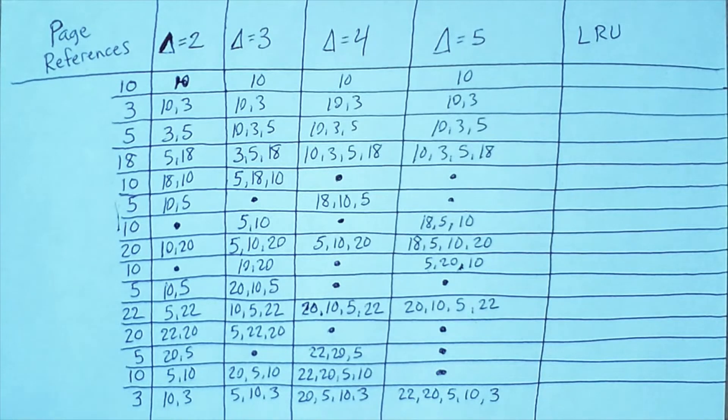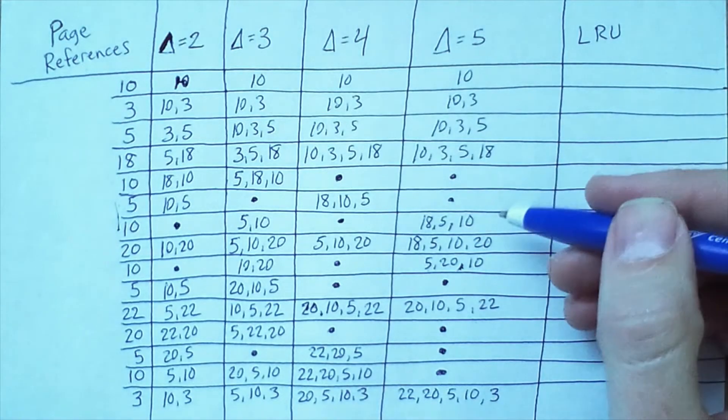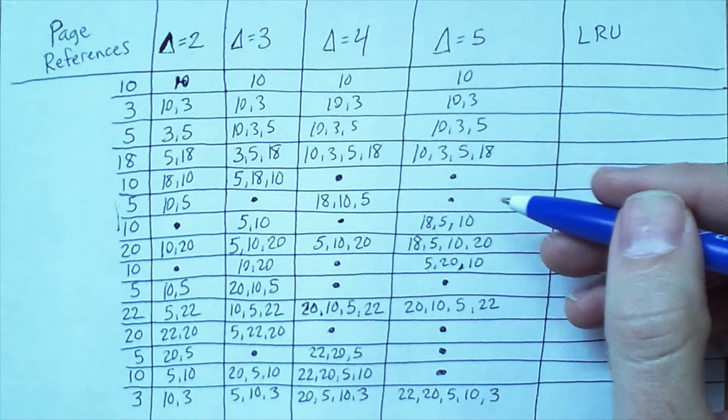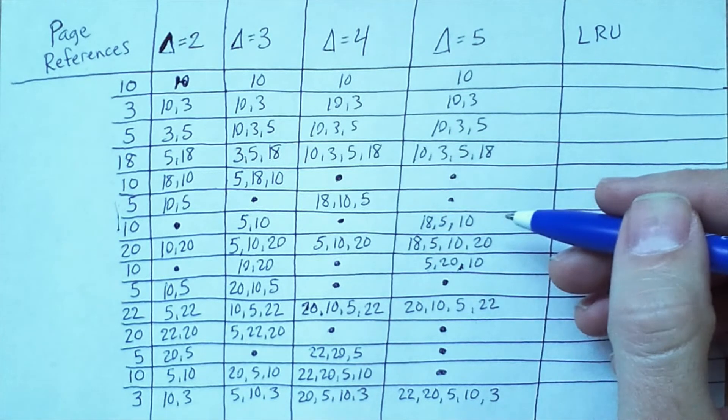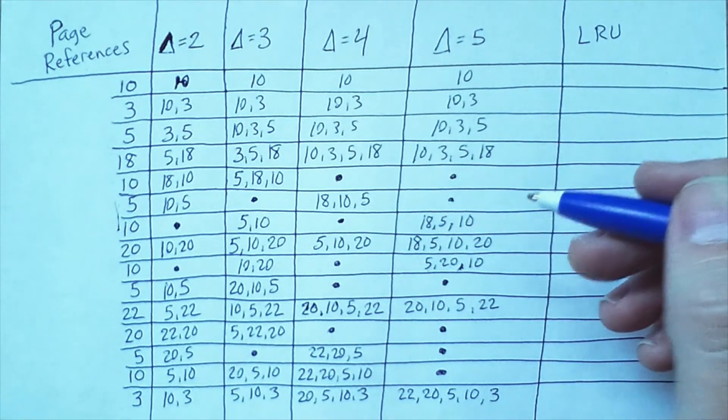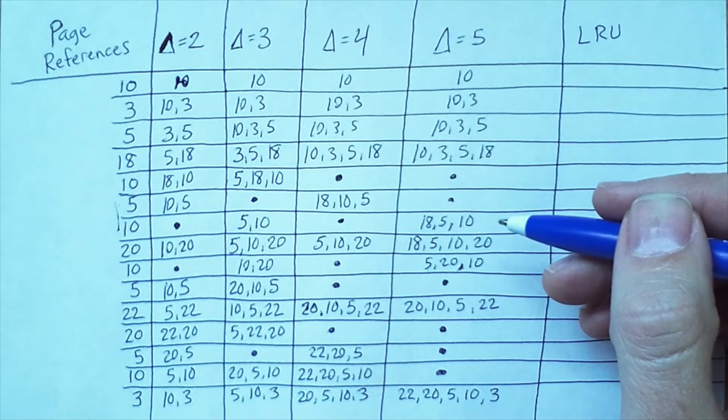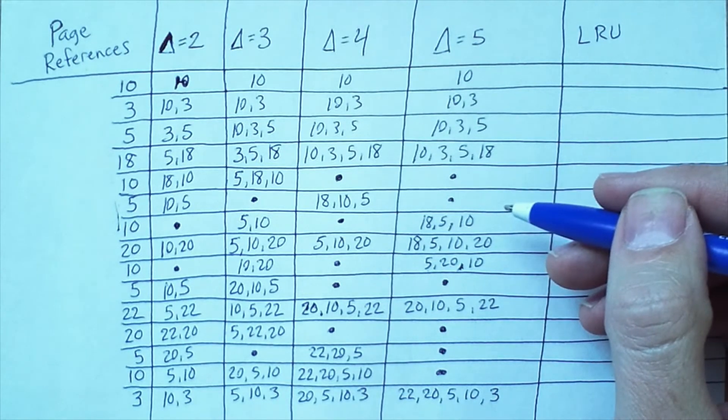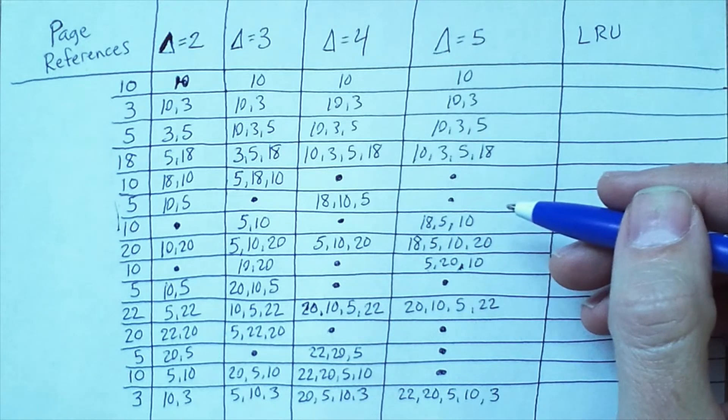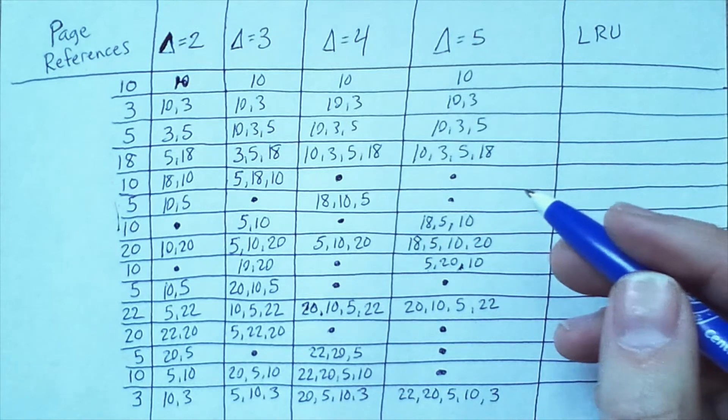And then back up and then the contents fluctuate a bit until we get to here where once again the working set does not change from the previous step. Because we have 5, 22, and 20, and 5, 22, and 20 are the last three pages we accessed.